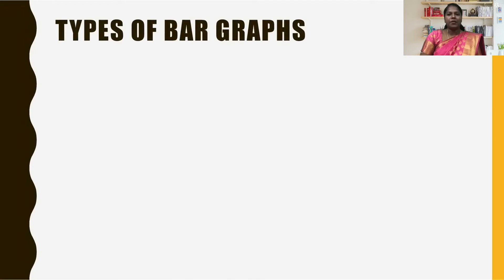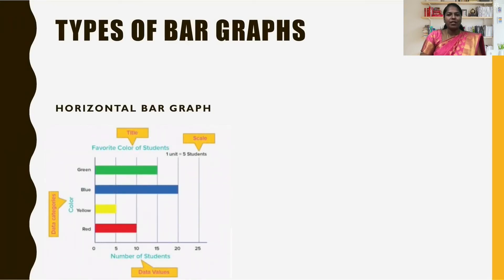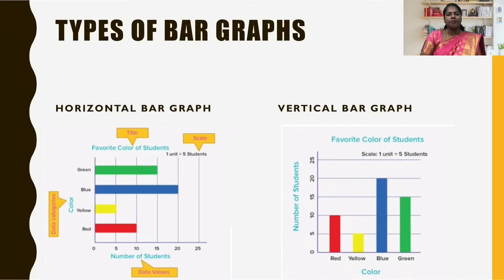Now let us look at the types of bar graphs. The first one is a horizontal bar graph, and the second one is a vertical bar graph. The graphs can be plotted vertically — that is, bars standing up — or horizontally — that is, bars laying flat from left to right. The most usual type of bar graph is vertical.